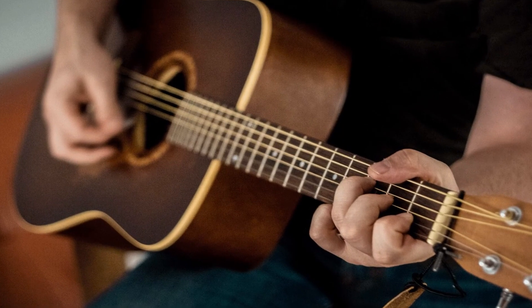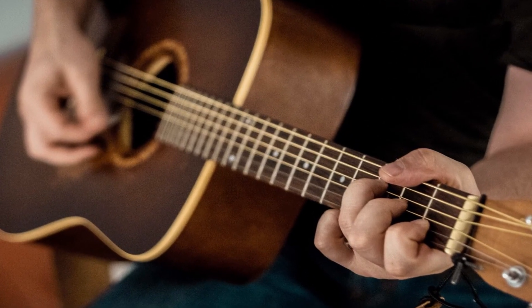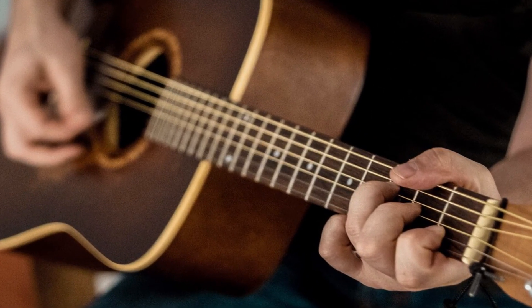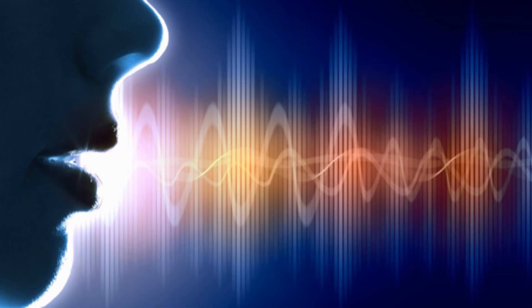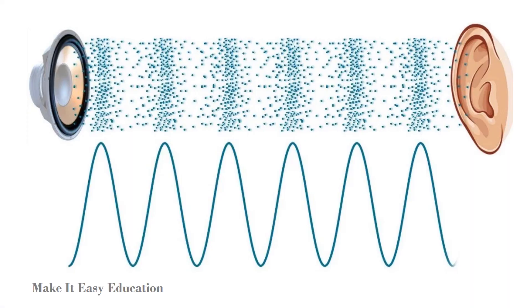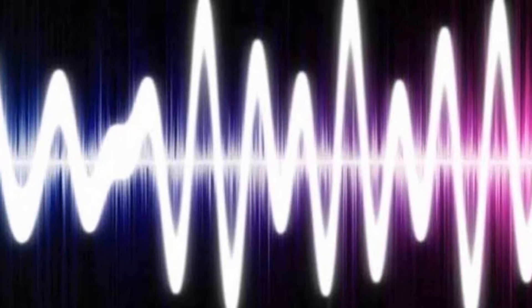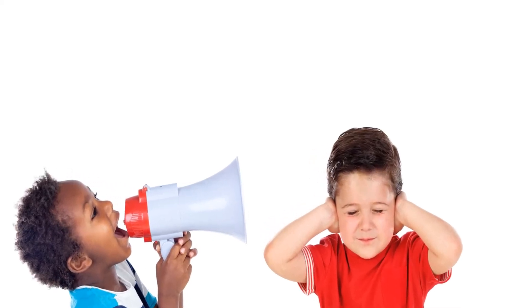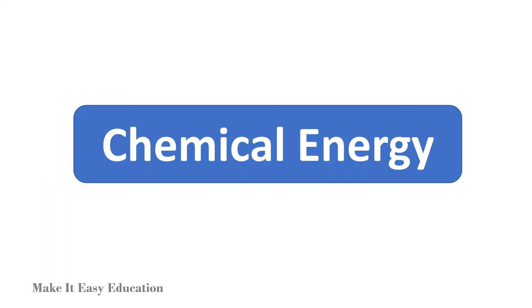Sound energy. Sound is made when something moves back and forth. This back-and-forth motion is called vibration. Pitch describes how high or low a sound is. Loud sounds have more energy than quiet sounds.